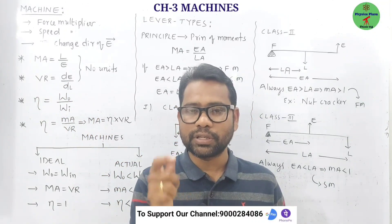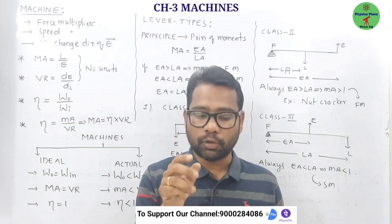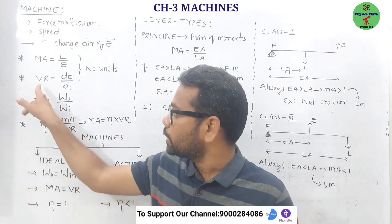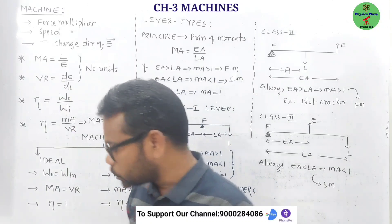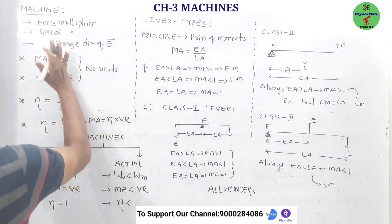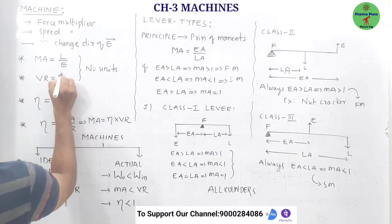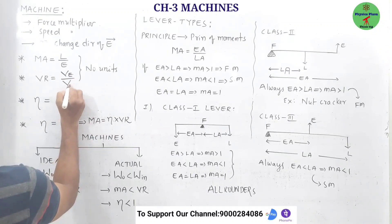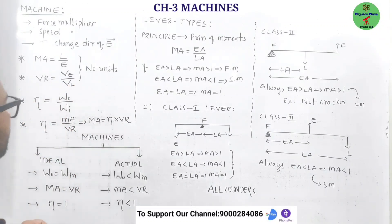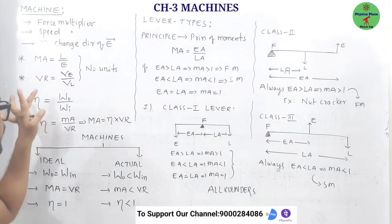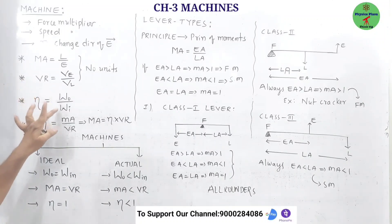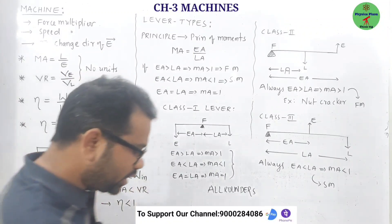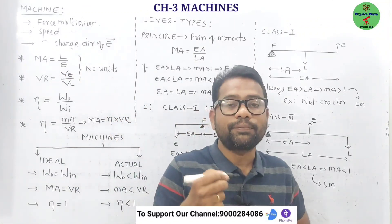They may ask: name the term which remains constant for a machine of a given design — that is velocity ratio. Velocity ratio is defined as the ratio of effort velocity to load velocity. And what is efficiency? It is the ratio of work output to work input. These three terms do not have units because they are ratios of the same two physical quantities.